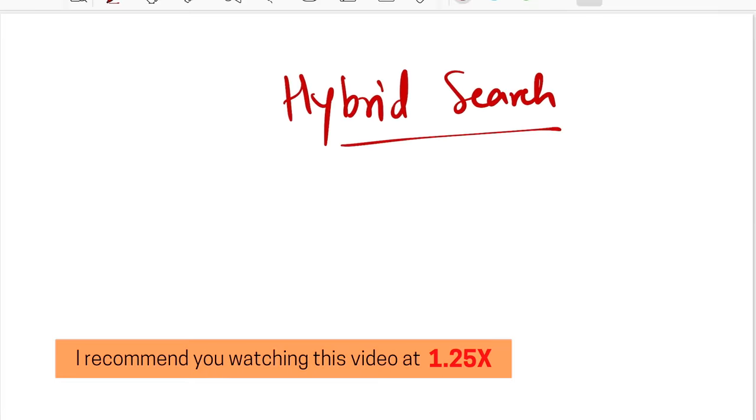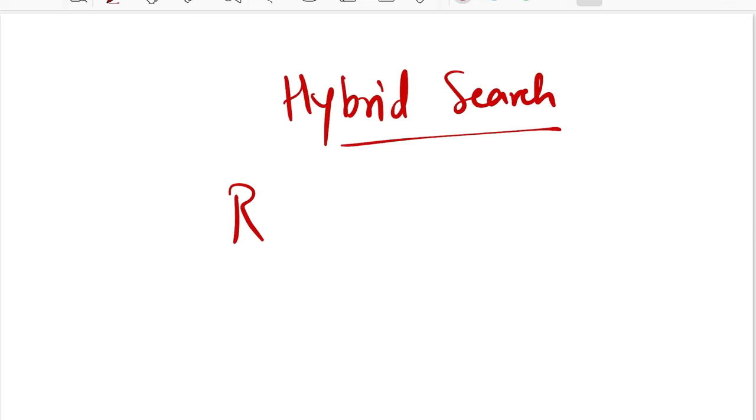Hello everyone, welcome back to the new video. Today we'll be looking into how we can improve our RAG systems by learning about what hybrid search systems look like, and we'll also look into one of the very popular techniques called reciprocal rank fusion that people often use to merge the results from multiple retrievers while implementing hybrid search.